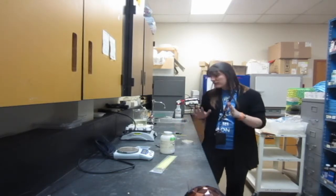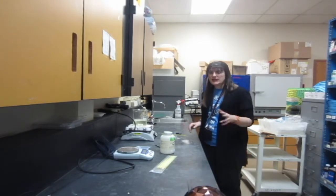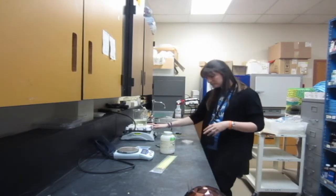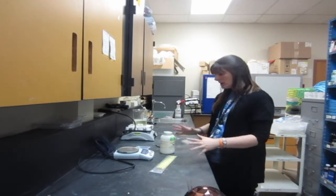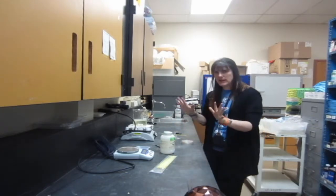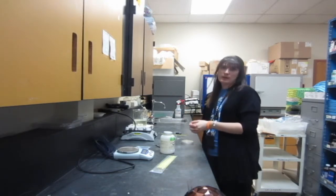When you go to make your agar, the first thing that you want to do is get all the materials that you'll need. You'll need your petri dishes, you'll need a hot plate, you'll need a scale, you'll need the agar, you'll need some inoculating loops. You want to gather all your materials to begin with.